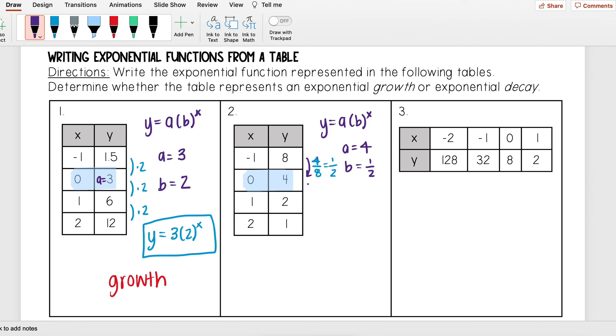If I simplify, that's really one half, and so my b value is going to be one half. To get from four to two, I need to multiply by one half. To get from two to one, I multiply by one half. So that means that my exponential function is y equals four times one half to the x.